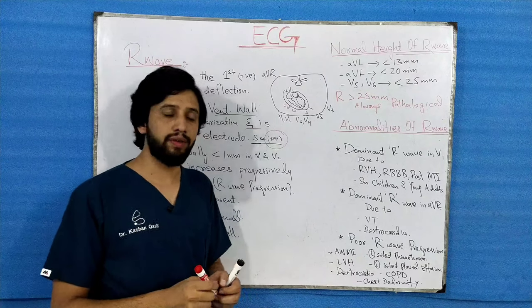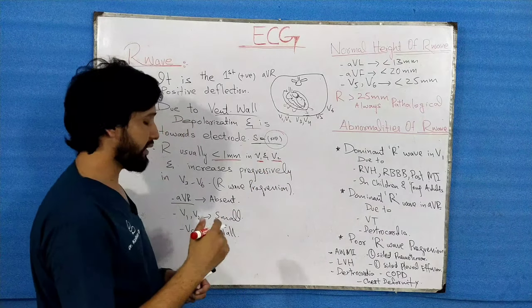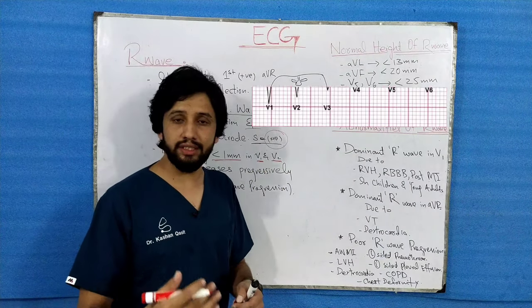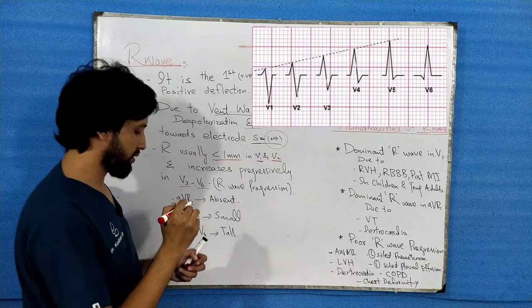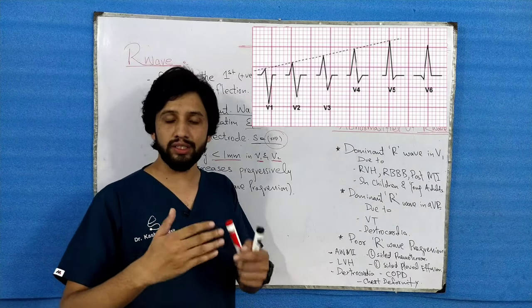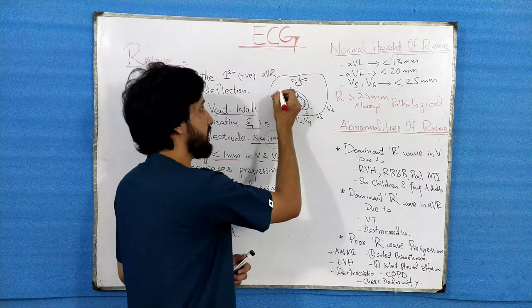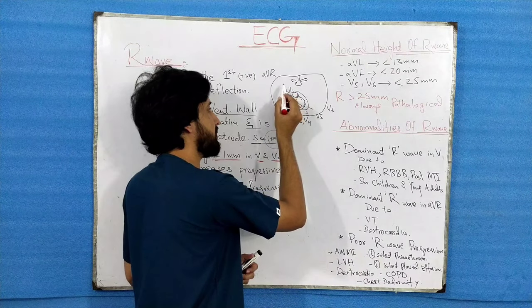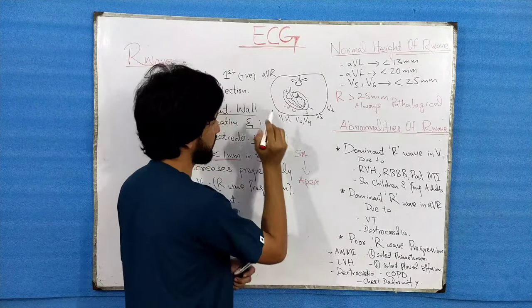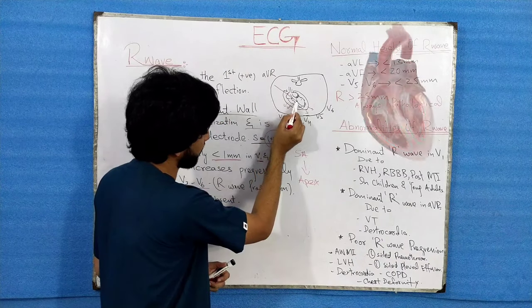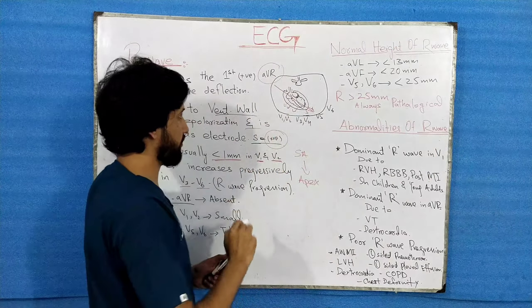When you look at an ECG paper, the R wave will be less than 1 millimeter in V1 and V2, and this R wave increases gradually in height from V3 to V6 — meaning the R wave is progressively increasing. The phenomenon behind this R wave progression is that the impulse moves from the SA node toward the apex of the heart.